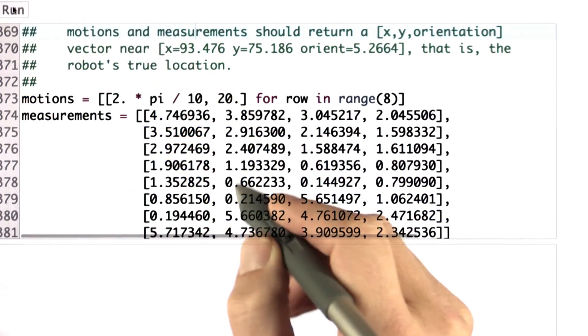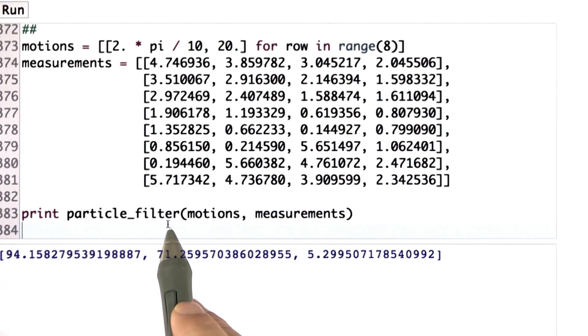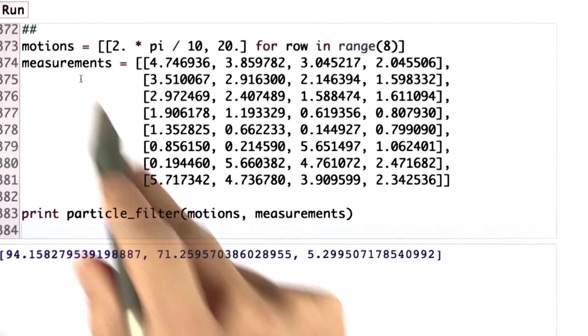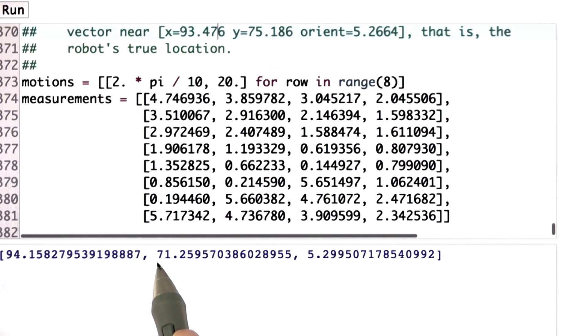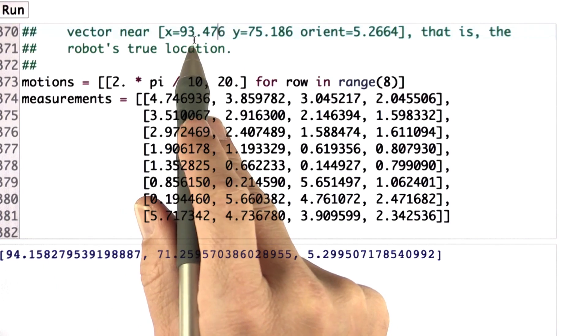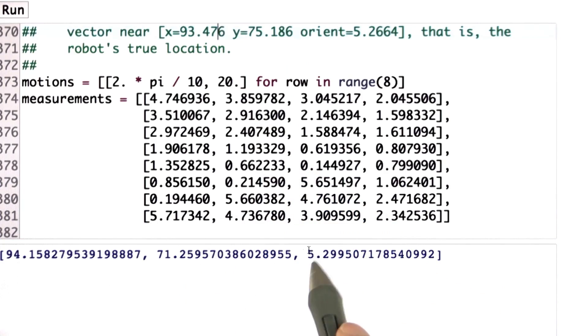When I run it, it runs the routine particle filter with those motions and those measurements as an input, and it produces an estimate, which is 94, 71, and 5.2, which isn't exactly the same as up here, but it's close. So this is a particle filter working.